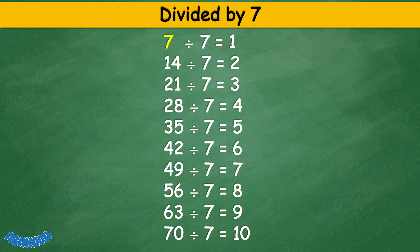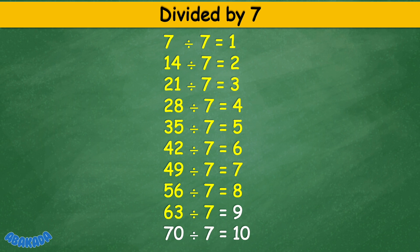Divided by 7: 7 divided by 7 equals 1, 14 divided by 7 equals 2, 21 divided by 7 equals 3, 28 divided by 7 equals 4, 35 divided by 7 equals 5, 42 divided by 7 equals 6, 49 divided by 7 equals 7, 56 divided by 7 equals 8, 63 divided by 7 equals 9, 70 divided by 7 equals 10.